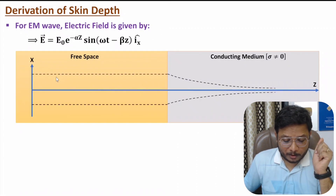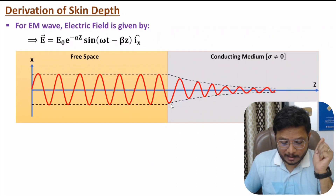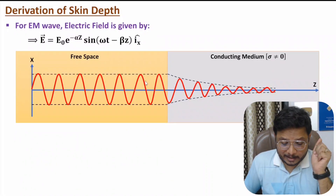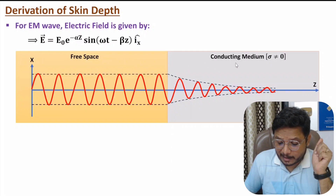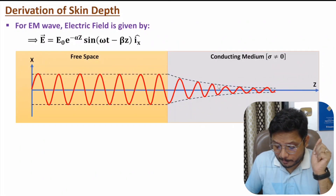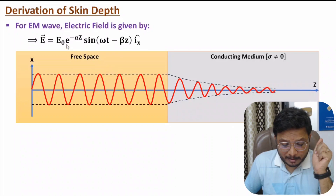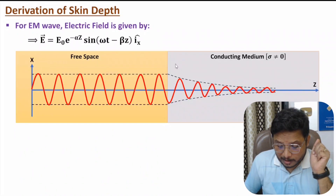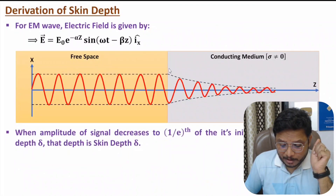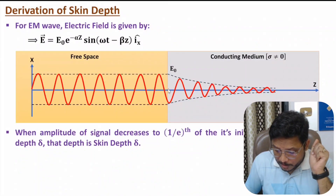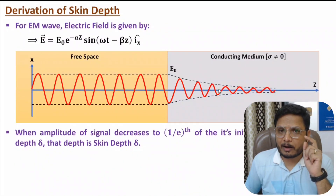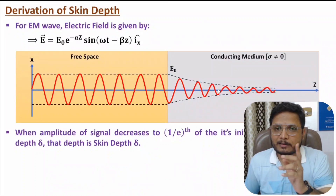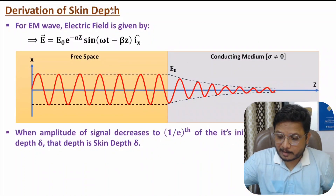You can observe that in free space the amplitude of oscillation is constant at E0, but inside a conducting medium it is decaying as E0 · e^(−αz). So on the surface, you observe amplitude E0, and it decreases with respect to propagation of the signal. Based on this decaying amplitude, there is a definition of skin depth.